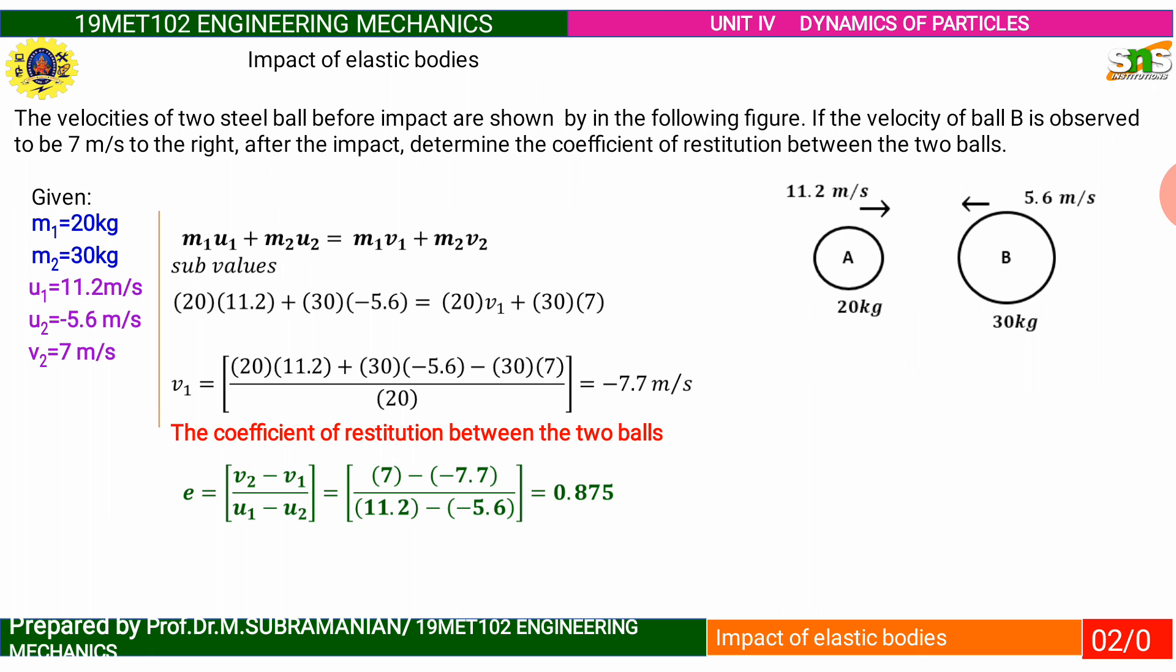The coefficient of restitution between the two balls is E equal to V2 minus V1 divided by U1 minus U2. Substitute the final velocities and initial velocities. Finally we get 0.875.